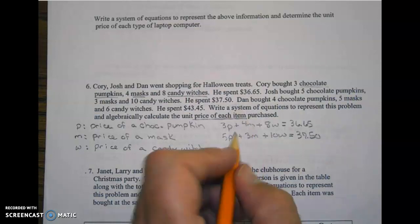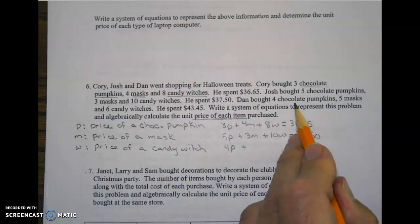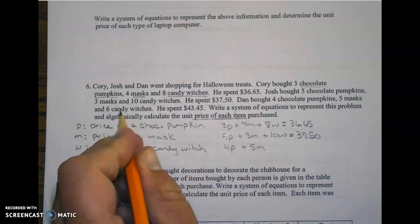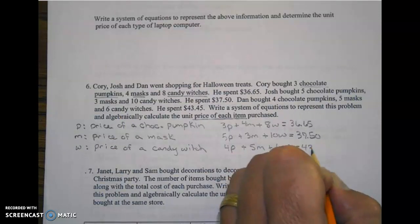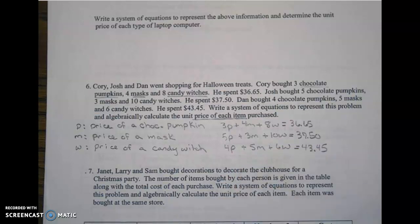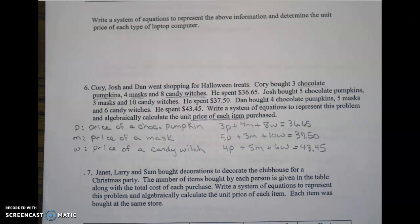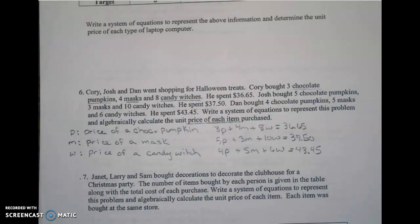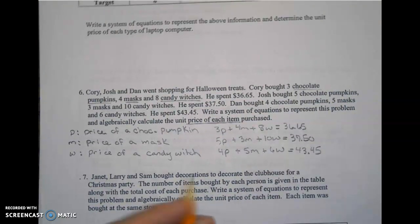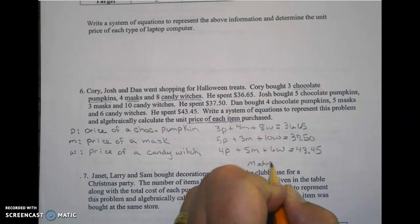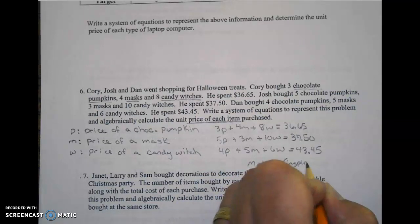And finally Dan bought 4 chocolate pumpkins, 5 masks, and 6 candy witches. He spent $43.45. So we're going to start off with solving using technology, and the technology we're going to use is using the matrix on our TI-Nspire calculators.